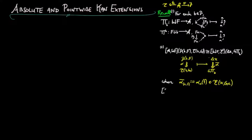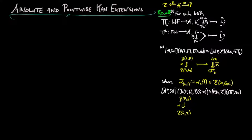Similarly, we have the functor category of natural transformations from the pre-sheaf E(f−, b) to E(g−, x) is equivalent to the category of co-cones on g∘π^b with vertex x.